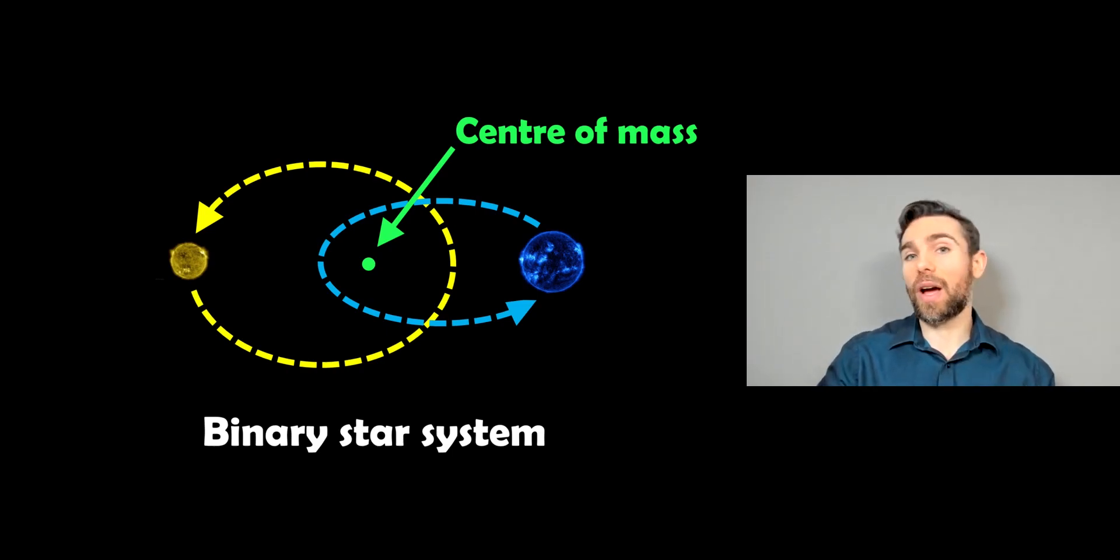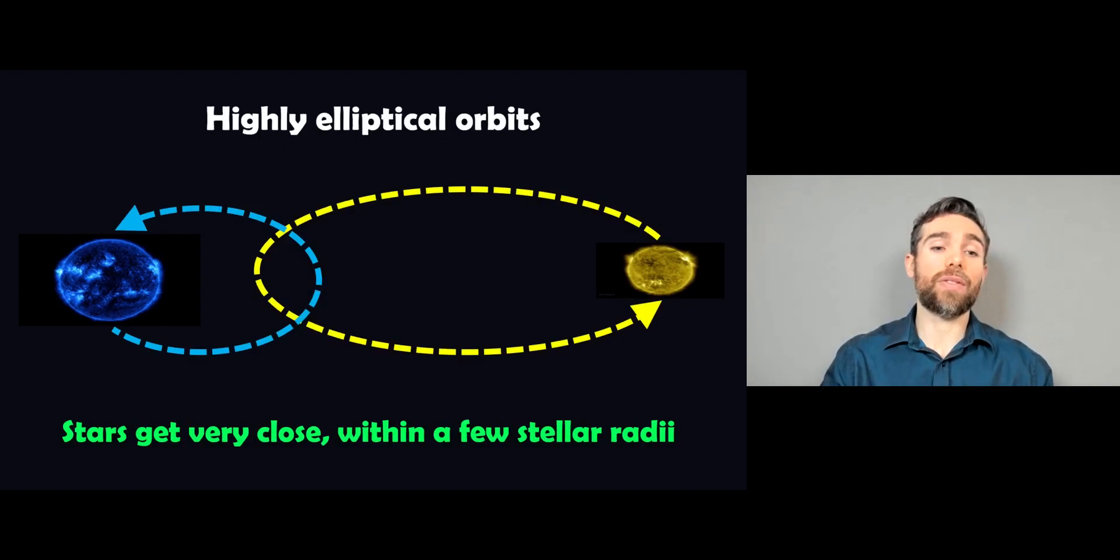Now there's a few different variations of a binary star system that you can have. If you have a system that has very elliptical orbits, it means that the stars get very close to each other each orbit. And when they get close to each other, their gravitational forces actually stretch each other out. So the stars become non-spherical and become almost ellipsoid in shape.